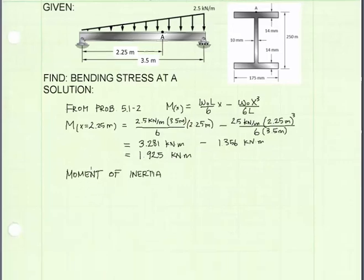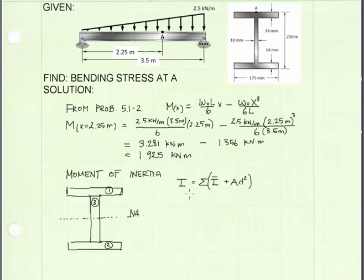Next we need to find the moment of inertia for our I-shaped cross-section. To calculate the moment of inertia I'm going to use the parallel axis theorem. And to use that I'm going to take our I-shaped section and divide it into three rectangles.